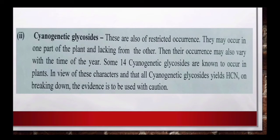Cyanogenic glycosides बहुत कम पाए जाते हैं। यह किसी plant के एक part में present भी हो सकते हैं और दूसरे part में absent हो सकते हैं, और यह समय के साथ बदलती रहती है। लगभग 14 cyanogenic glycosides plants में पाए जाते हैं। इस character को भी taxonomic evidence की तरह use किया जाता है। Cyanogenic glycosides HCN बनाते हैं, इसलिए इनको बड़े ध्यान से experiment करना चाहिए।